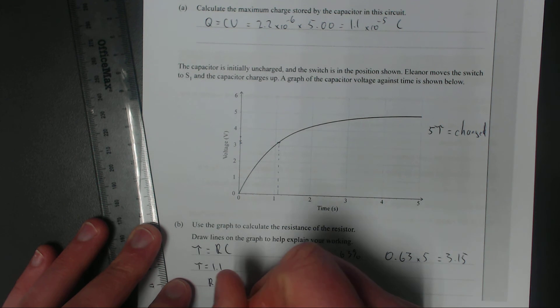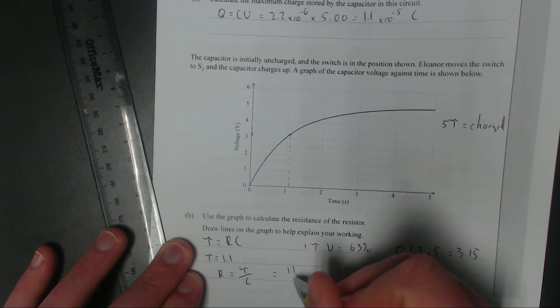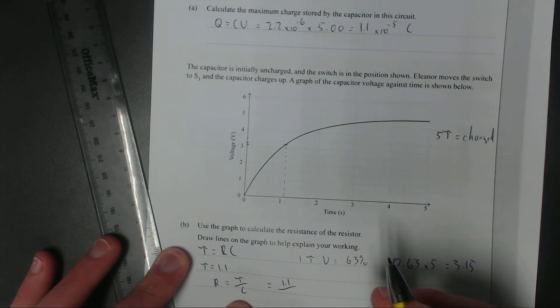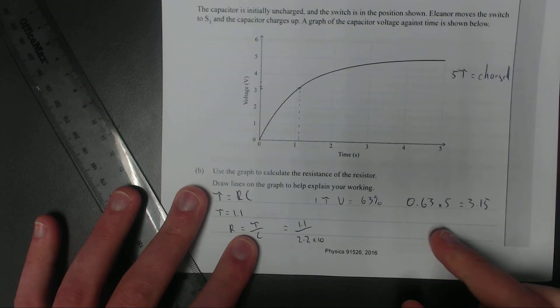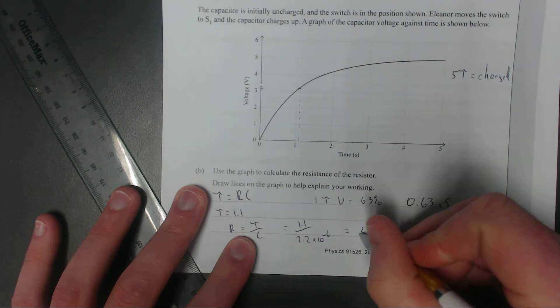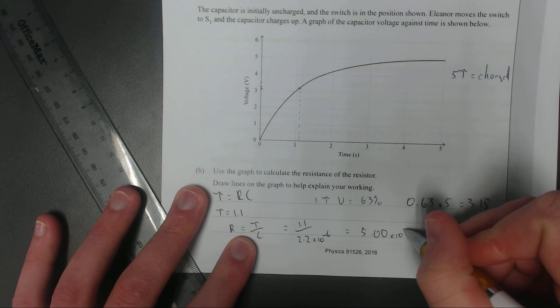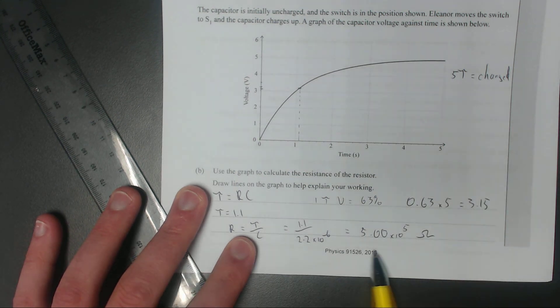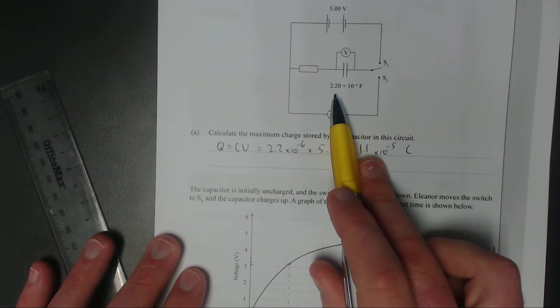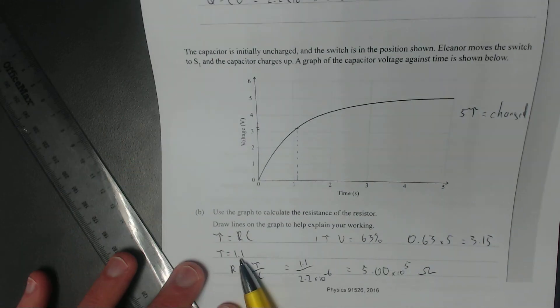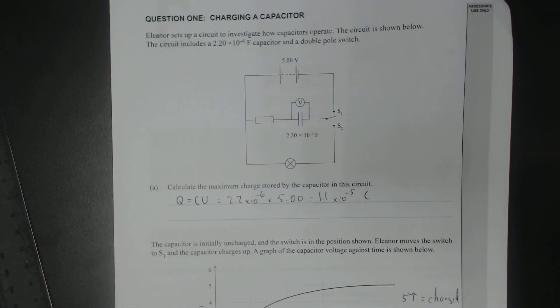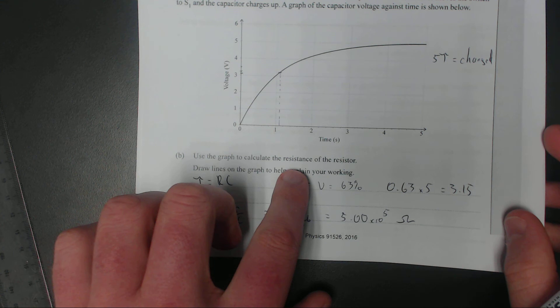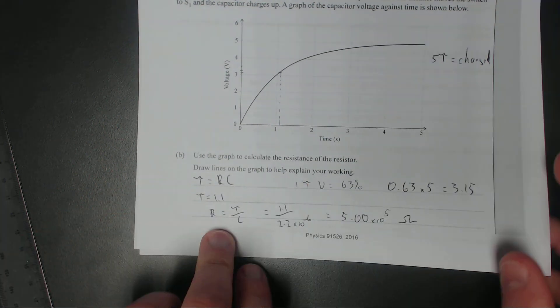Right, resistance R is equal to tau over C, which is equal to 1.1 over capacitance, which is 2.2 times 10 to the negative 6, which is equal to 5.00 times 10 to the power of 5 ohms. Notice I use 3 significant figures because the capacitance up here is 3 SF. Really speaking, it should be 2 SF because my time constant's only 2 SF, but it doesn't really matter that much. Right, so that's that answer. Yeah, that pretty much explains it.